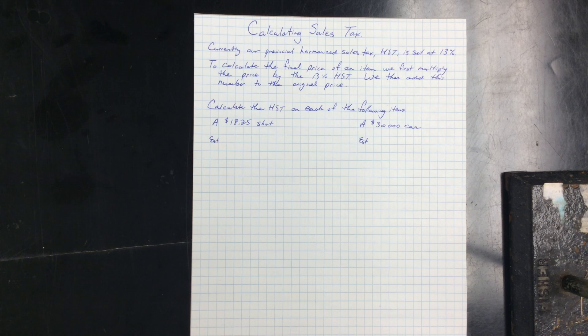Hello and welcome, Mr. Wiley teaches math. Today we're going to be calculating sales tax. Currently our provincial harmonized sales tax or HST is set at 13%, so that's the number that we're going to be using for today.